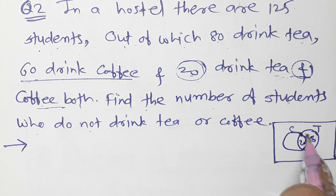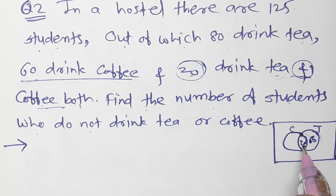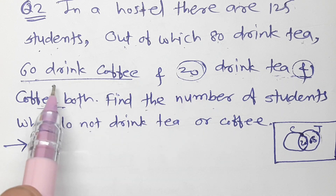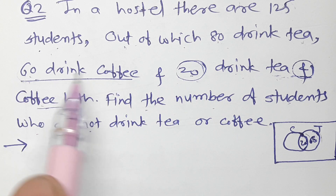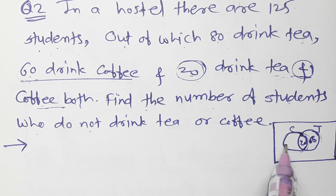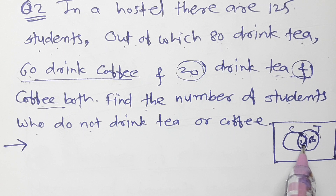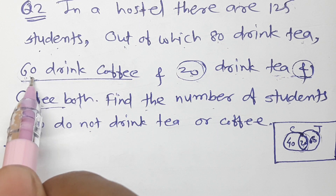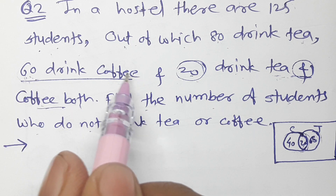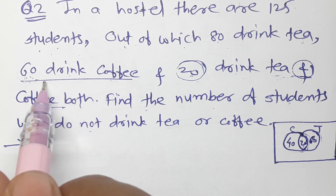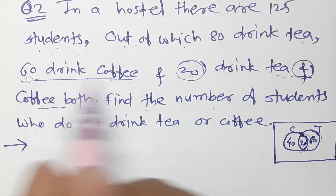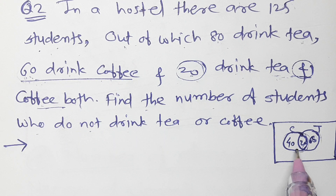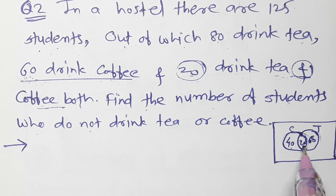In the coffee circle, 60 total drink coffee. Since 20 is common, only coffee is 40. In the tea circle, 80 total drink tea, minus 20 common, so only tea is 60. Adding all parts: only tea 60, plus both 20, plus only coffee 40 — that gives 120 students.